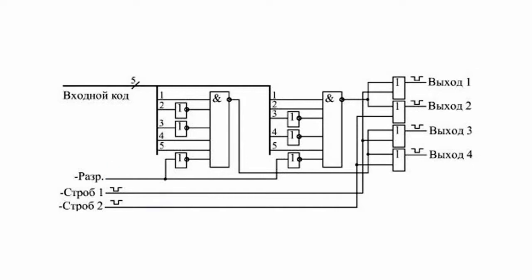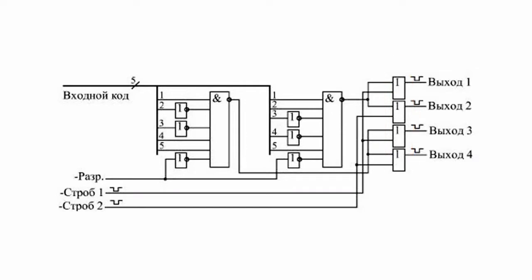When the signals STOBE1 and STOBE2 are supplied, the circuit outputs negative pulses. The output pulses from 1 to 4 are generated at various combinations of input codes and STOBE signals 1 and 2. This means that the logic of the circuit's operation is rather complicated and involves quite a number of logical components.